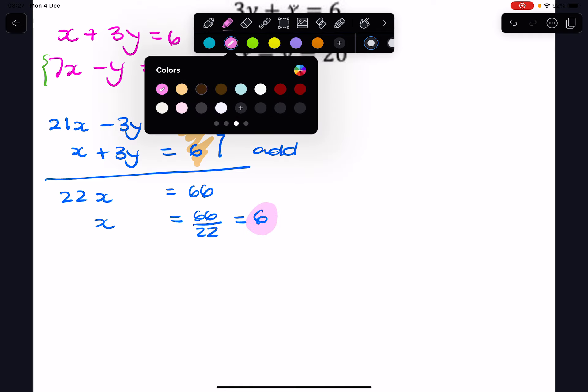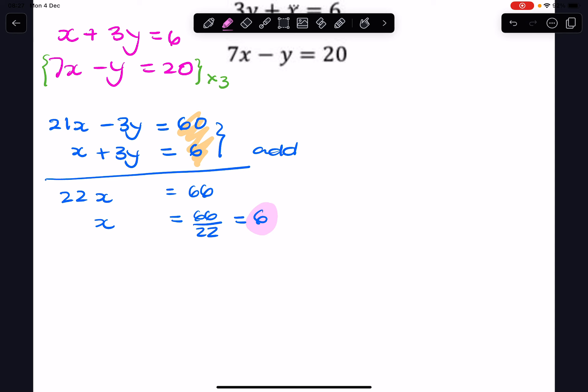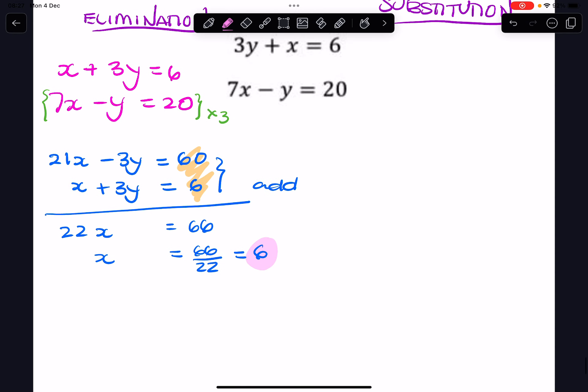We still need to find the value of y. So I can find the value of y by substituting x into any of the equations. I could substitute it here or here, so I'm going to substitute it in this equation here: 7x minus y equals 20, and I will replace this x with 6.